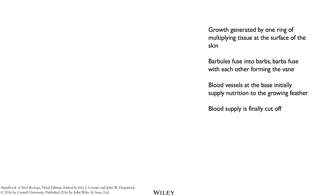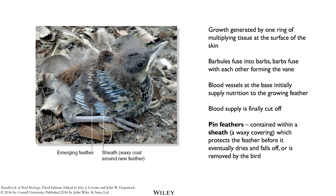Before the feather is ready, you have a sheath around it — you can see the sheath here, and the feather is emerging from the tips. Eventually the sheath either dries off or birds pick at them while preening. Young birds, immediately after the feathers form, remove these sheaths — it's a waxy covering.